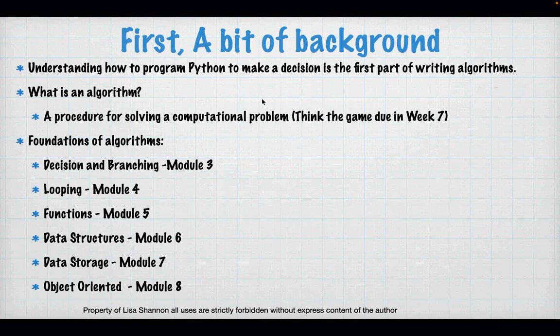The foundations of algorithms — we're starting tonight with decisions and branching. Next week we go into looping, which is another form of decisions and branching done repeatedly. Functions are naming a group of commands so they're callable by that name. Data structures are lists and dictionaries — how to organize our data. Data storage is writing to disk, persisting data. And object-oriented is grouping your data and functions into an encapsulated thing you can use again and again.